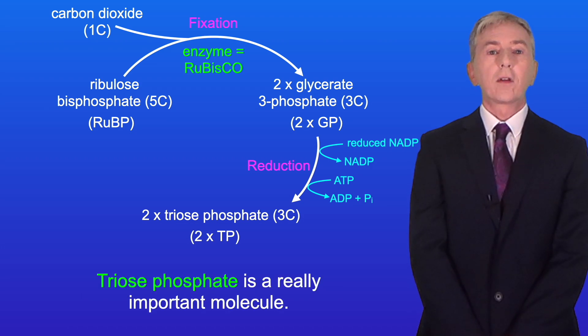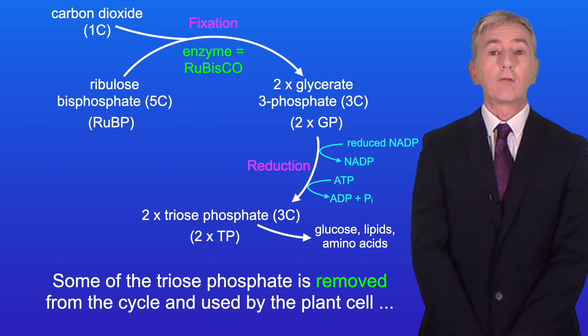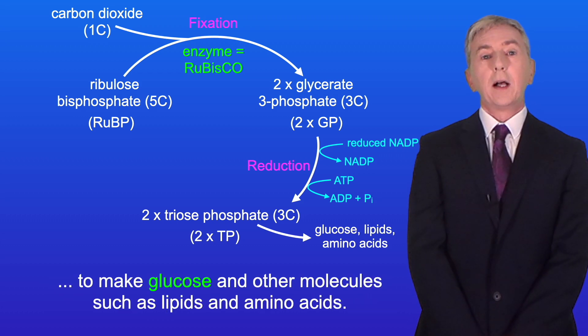Now, triose phosphate is a really important molecule. Some of the triose phosphate is removed from the cycle and used by the plant cell to make glucose and other molecules such as lipids and amino acids.